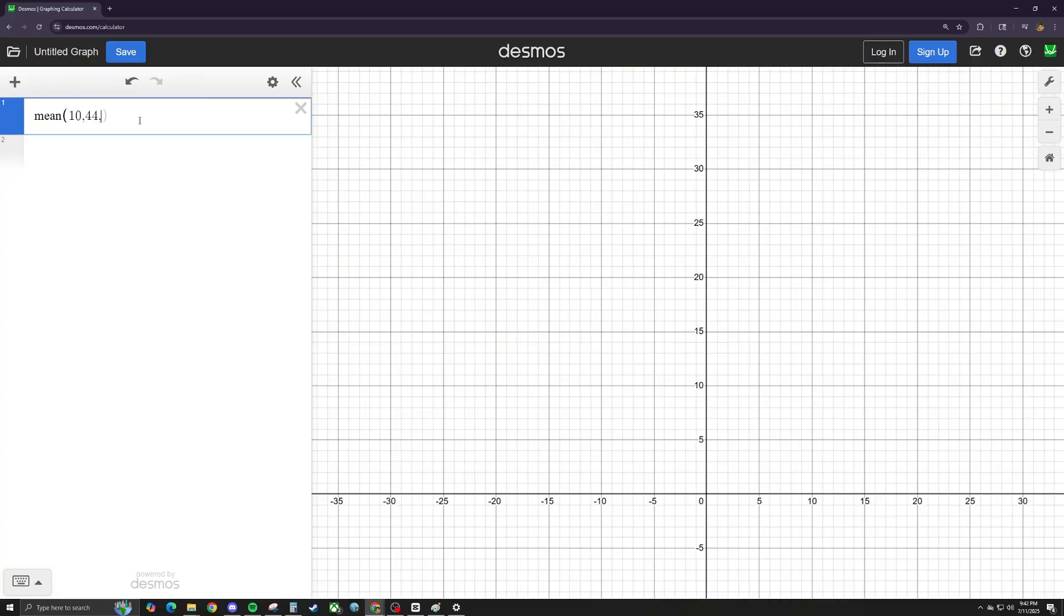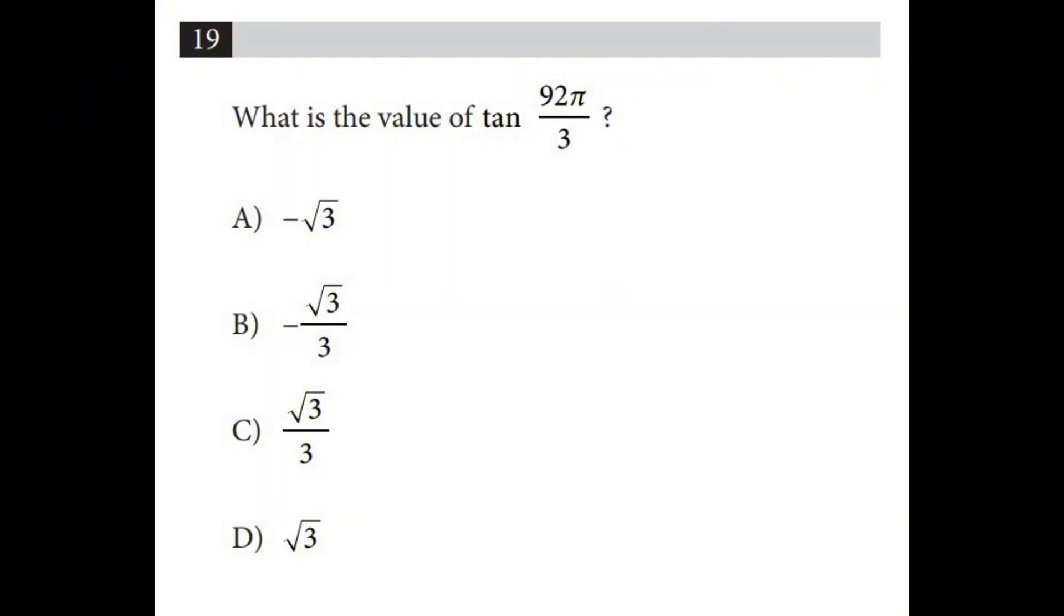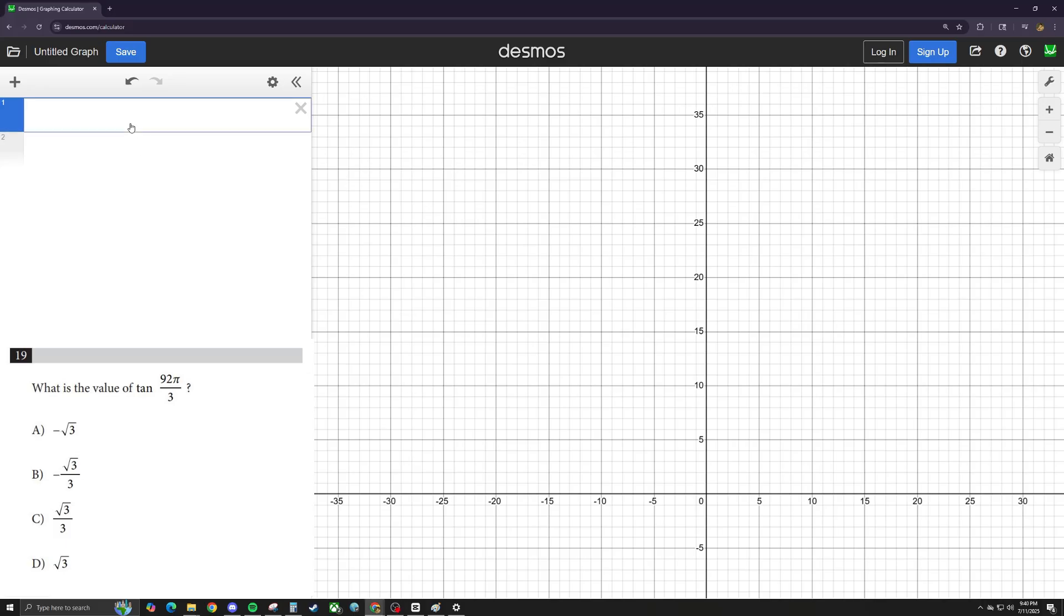Desmos has a ton of other functions like finding the mean, the median, the distance. All you have to do is plug in your set of numbers and Desmos will spit out the answer for you. You can also do trig functions like this. You could put in tangent of 92 pi over three and it will give it to you in a decimal. But again, you could just brute force all the radicals in Desmos and get the correct answer.